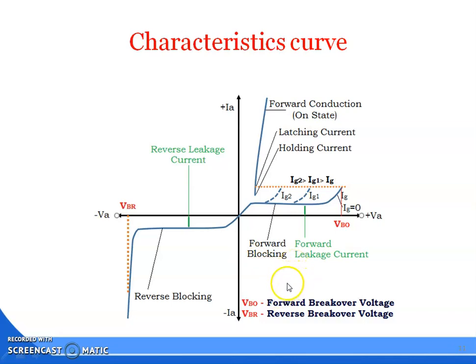First is the forward blocking mode shown in the fourth quadrant. In this mode, we are giving supply voltage to the anode and cathode terminal, but the reverse biased junction J2 is present there. That is why the SCR will not turn on. For turning on the SCR, it is necessary to provide some additional voltage to the gate terminal. When we give voltage, the current will start increasing.